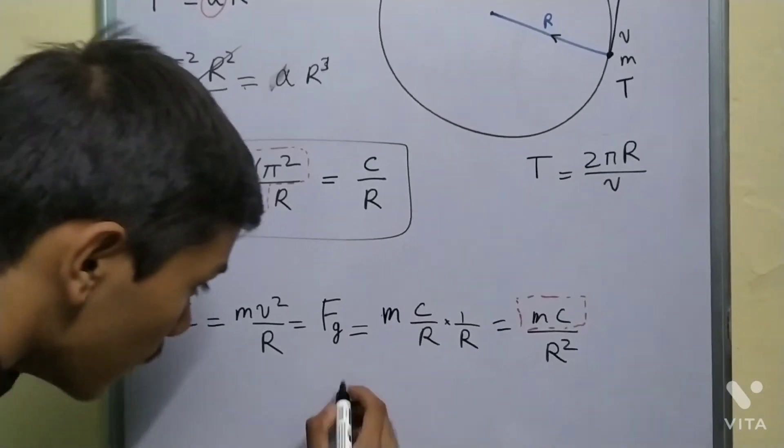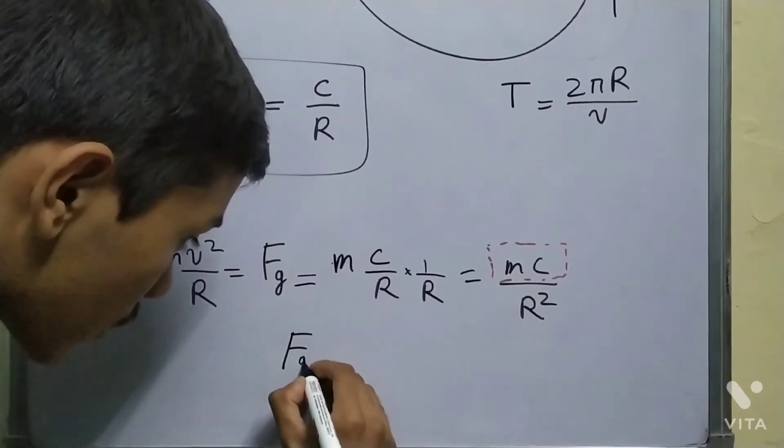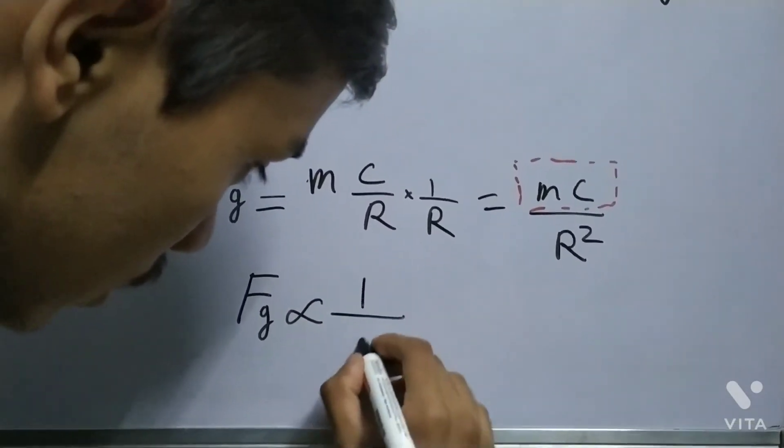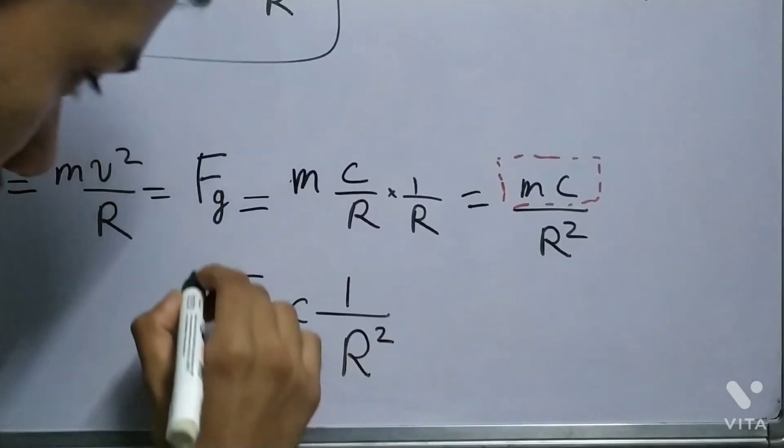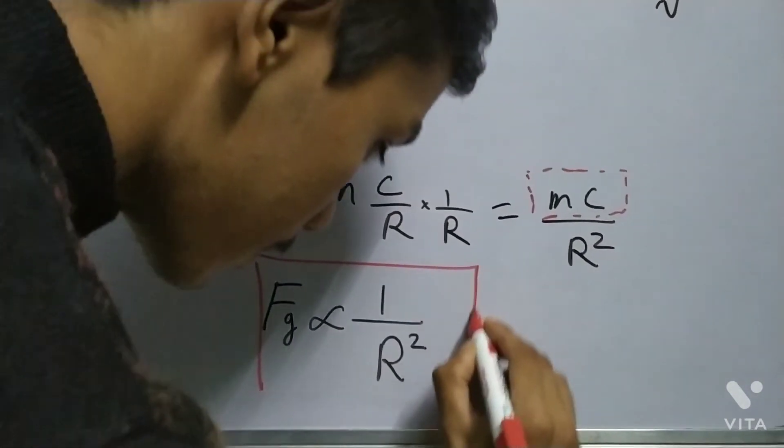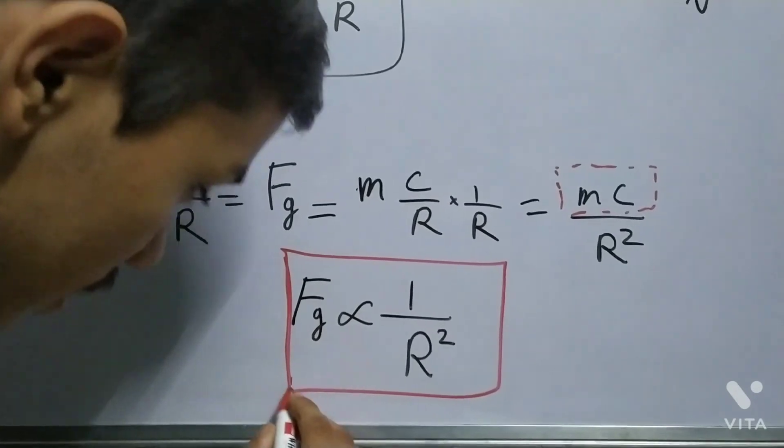So from this you can say that the force of gravity is inversely proportional to the square of the distance, and this is a very important result.